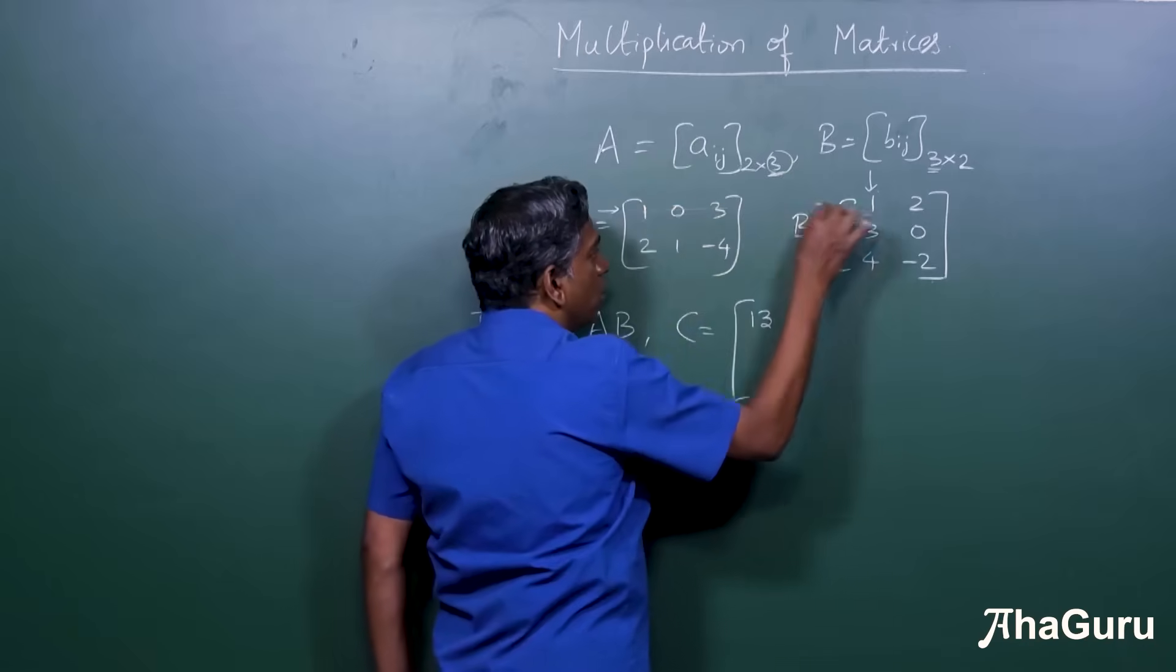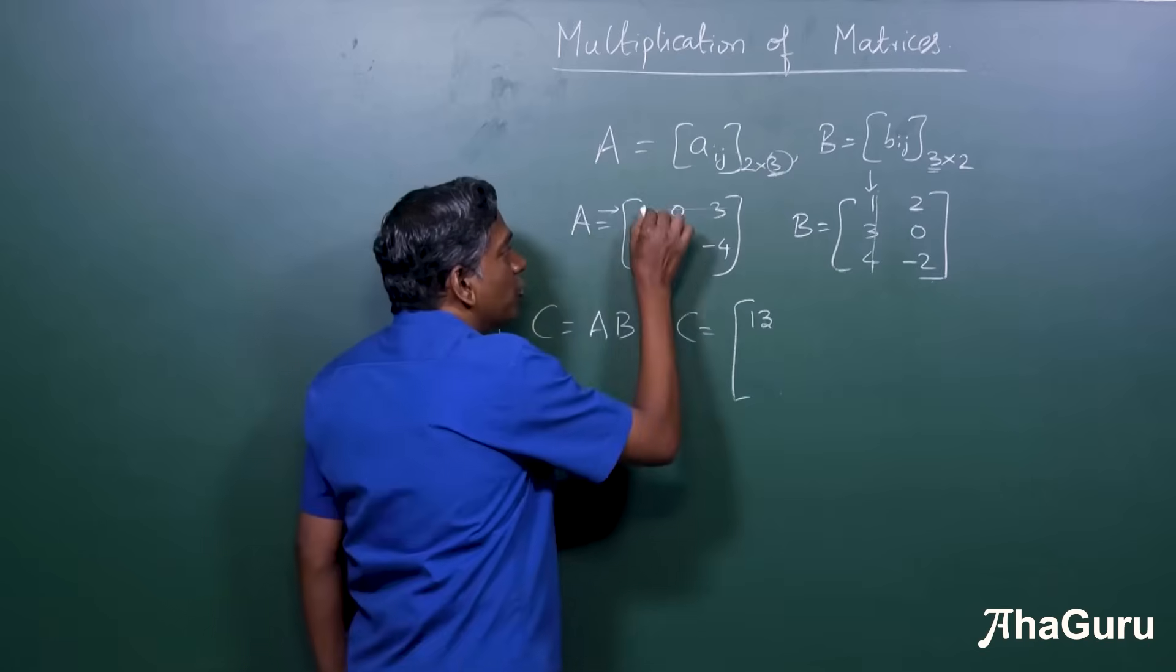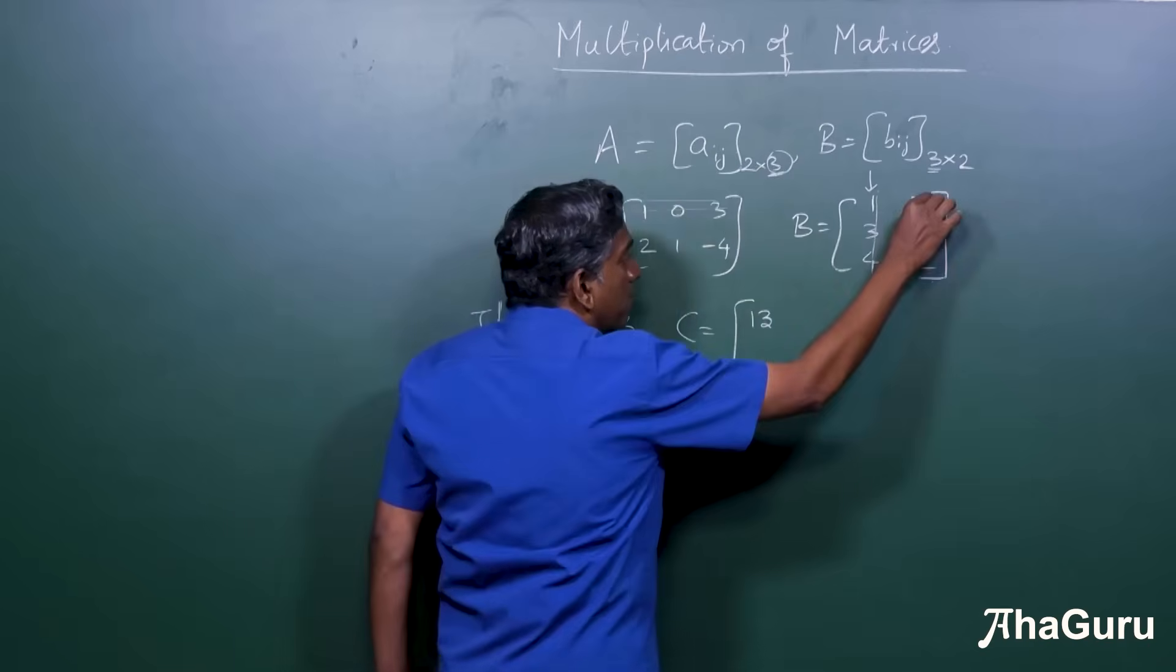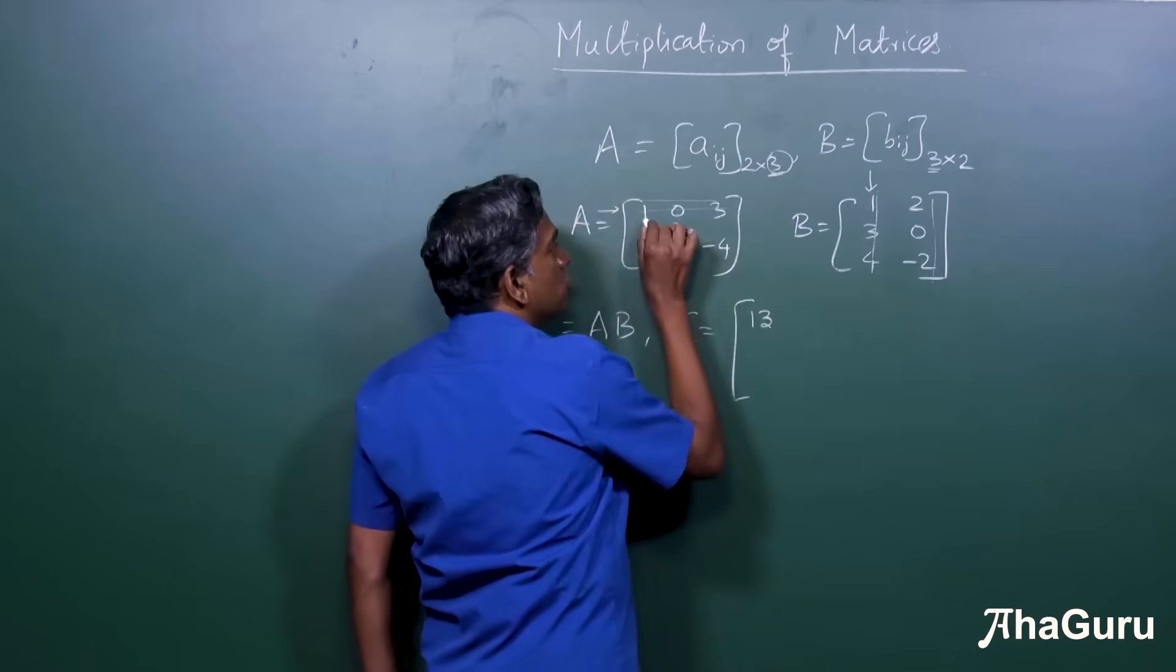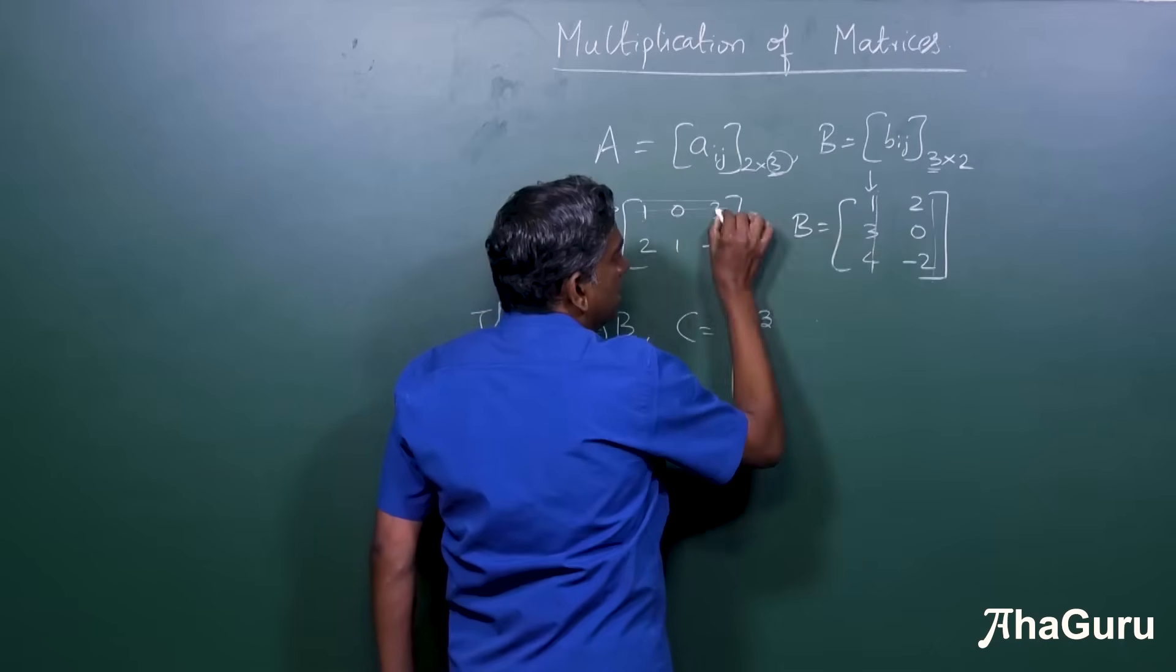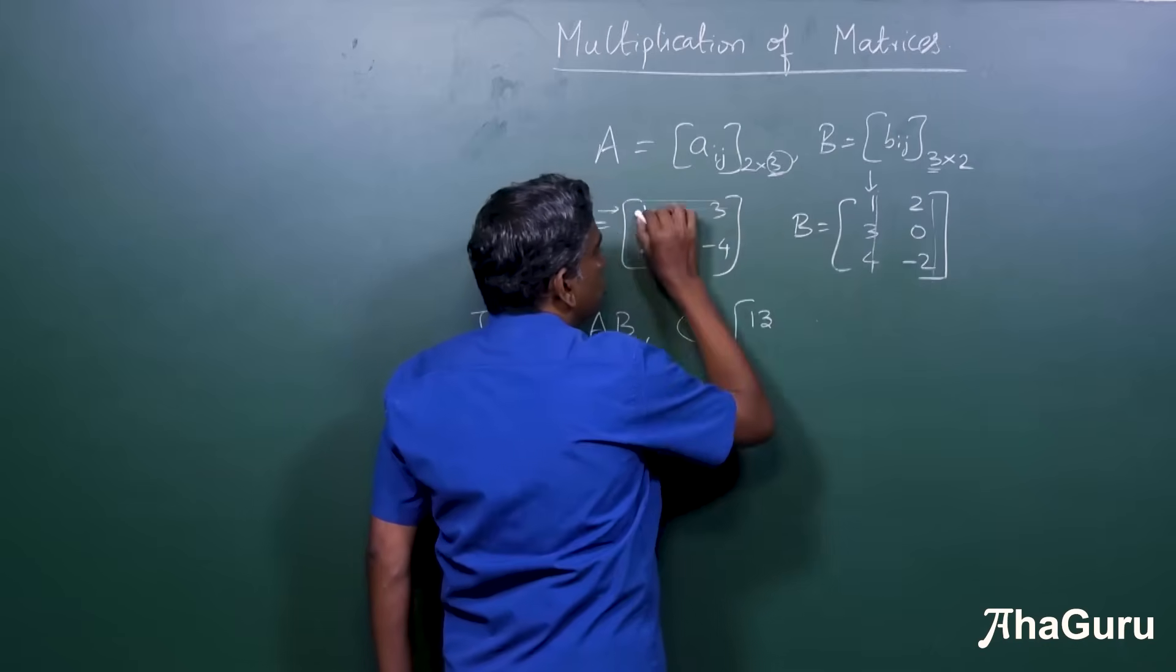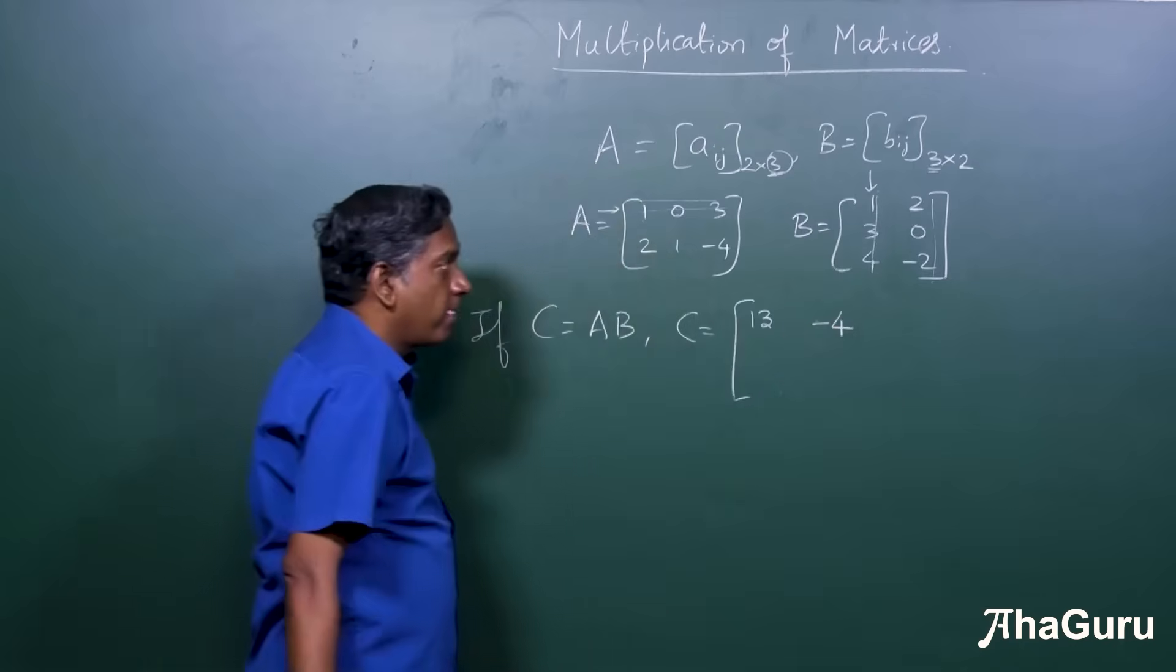So we multiply this row by this column. Next, we are going to multiply the same row by the second column and put it in the second column. So 1 into 2, 0 into 0, 3 into minus 2. So it's 2 minus 6 will be minus 4.